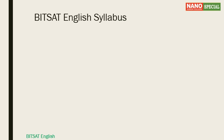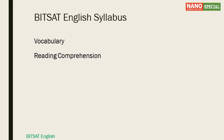Let us now look at the syllabus. As per the official syllabus published by the BITSAT authorities, your English syllabus consists of four parts. One is vocabulary or word-related, and the remainder of this video will be dedicated to vocabulary questions. Then you have reading comprehension — you are given a passage and questions following it. What you need to do is read the passage and answer questions based on what is contained in it. Most of the questions are fact-based or factual.